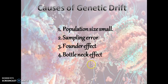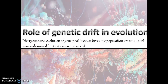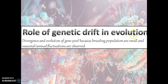There are some causes of genetic drift: small population size, sampling error, founder effect, and bottleneck effect. Regarding the role of genetic drift in evolution, there is divergence in the evolution of the gene pool because breeding populations are small and seasonal or annual fluctuations are always present.